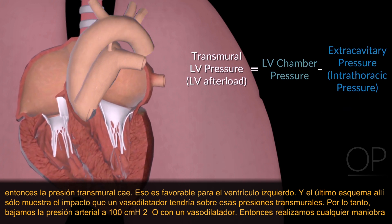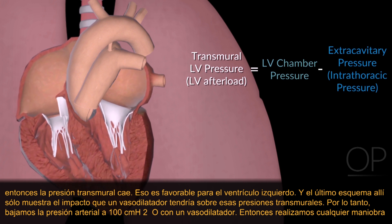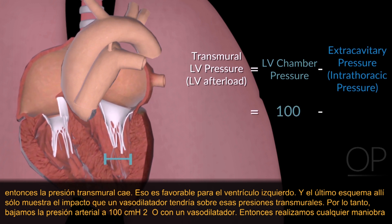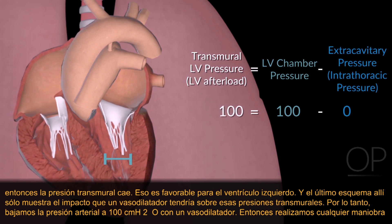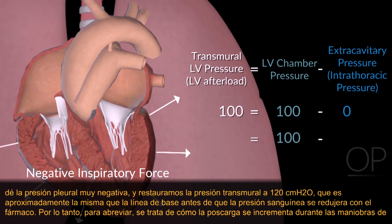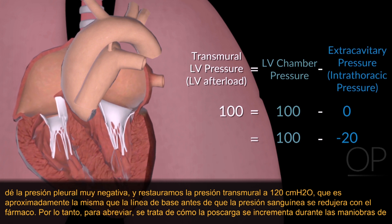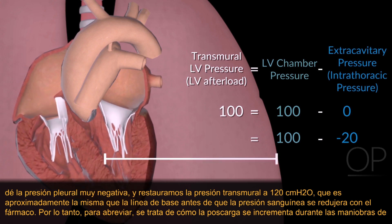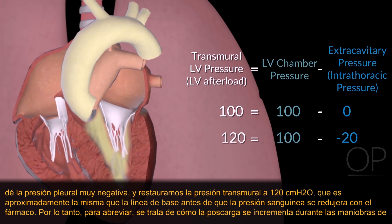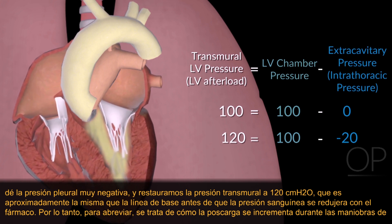The last schematic shows the impact a vasodilator would have on those transmural pressures. We drop the blood pressure to 100 with a vasodilator, then perform whatever maneuver gives us a very negative pleural pressure, and we restore the transmural pressure to 120 — around the baseline before the blood pressure was dropped with the drug.